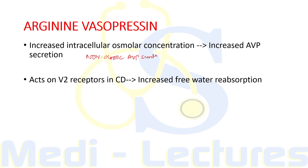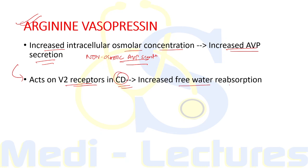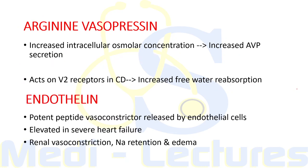Regarding the role of arginine vasopressin in edema formation — any condition leading to increased intracellular osmolar concentration stimulates increased AVP secretion, although non-osmotic vasopressin secretion can also occur due to decreased hydrostatic pressure and effective arterial blood volume. AVP acts on V2 receptors in the collecting duct to increase free water reabsorption, leading to increased total body water and edema formation.